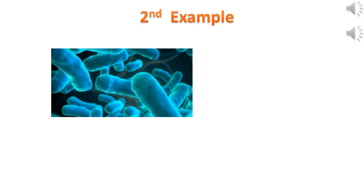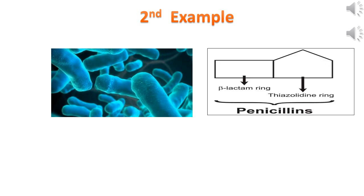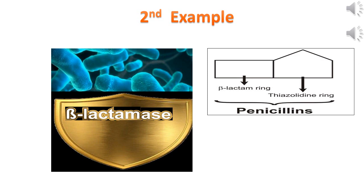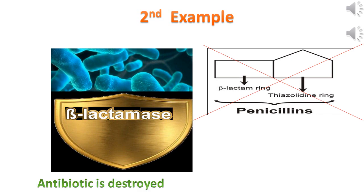Consider the second example. Bacteria will develop mechanisms to overcome the action of antibiotics. To protect itself, bacteria produces an enzyme — enzymes are suffixed as -ase — which destroys the beta-lactam ring. Therefore, this enzyme is called beta-lactamase. This beta-lactamase will destroy the beta-lactam ring of antibiotic penicillin. Therefore, the antibiotic is destroyed and has no action on bacteria. That is, we say bacteria has developed resistance to the antibiotic.